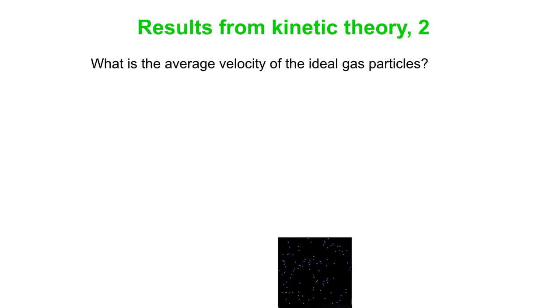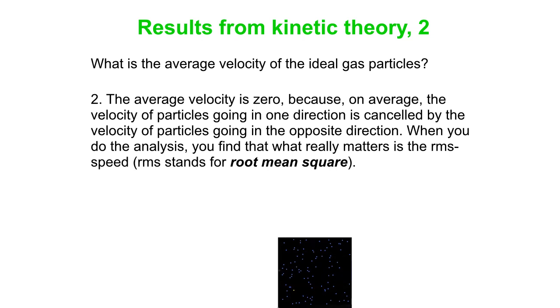What's the average velocity of the ideal gas particles? Well, of course, the average velocity is zero because all the molecules go in one way, cancel out, all the ones go in the other way. Okay.